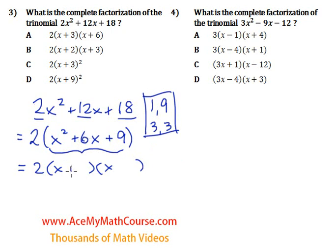So we can add a 3 over here, add a 3 over there. And that is the answer. 2 times x plus 3 times x plus 3. Now note that these are the same, so I can rewrite this as 2 times x plus 3 squared. And that's the answer right here. Fantastic.